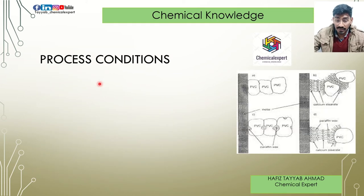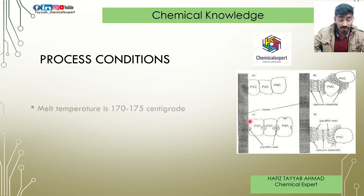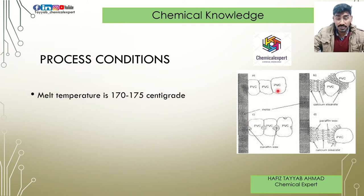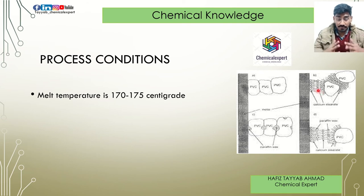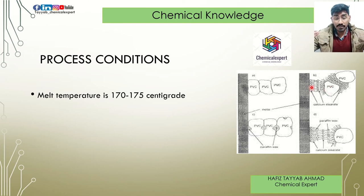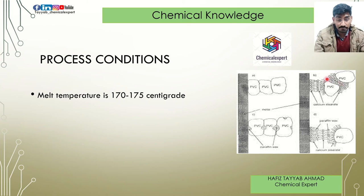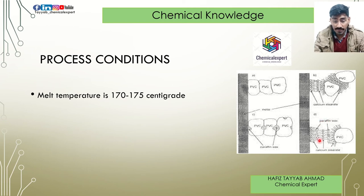In this picture you can see the polymer monomers — one, two, three — and between them and the metal surface, paraffin wax helps during the extrusion process. In this part, calcium stearate — which is most commonly used as an internal lubricant, and sometimes zinc stearate — is shown. PVC wax and paraffin wax are both present, and calcium stearate reduces friction. When paraffin wax and calcium stearate are both added, it is really effective.